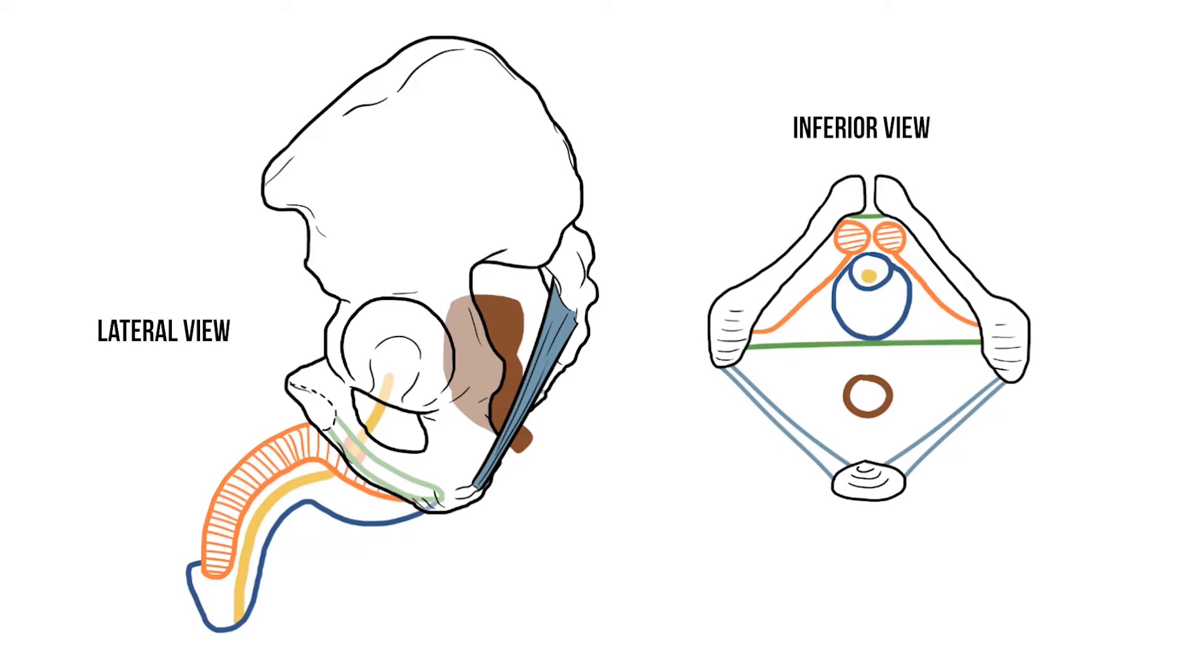So instead this tissue is more spongy. It fills with some blood during erection but the urethra can stay open within it. Because of this we call this column the corpus spongiosum. And the portion of the urethra inside of it is the spongy or penile urethra.